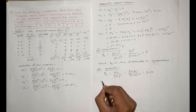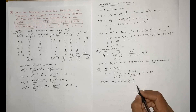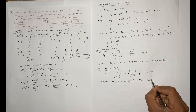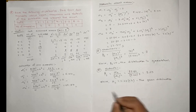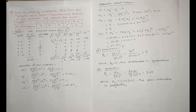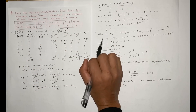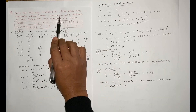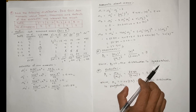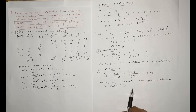Now, β₂ equals 2.29. We compare β₂ to 3. Since β₂ = 2.29, which is less than 3, the distribution is platykurtic, meaning it is flat-topped. To summarize: β₁ = 0, which means the distribution is symmetrical; and β₂ = 2.29, which is less than 3, meaning the distribution is platykurtic.